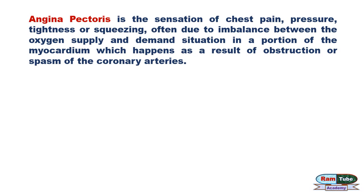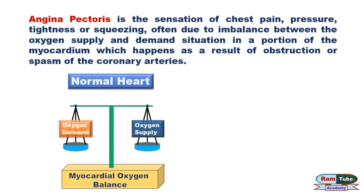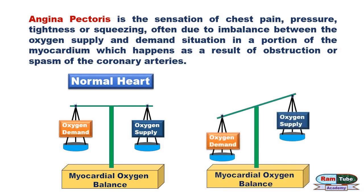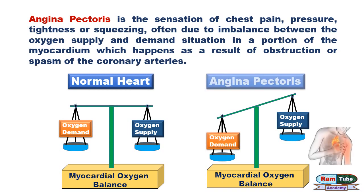This happens as a result of obstruction or spasm of coronary arteries. In a normal heart, oxygen demand and oxygen supply is roughly equal, but when there is a marked increase in the demand of oxygen which is not met by oxygen supply, it leads to angina pectoris because of the low blood supply to the heart.